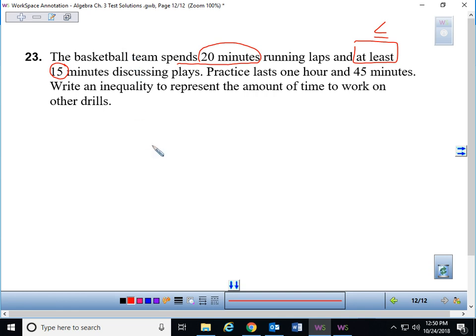And then it says, practice lasts 1 hour and 45 minutes. Okay, that's not too bad. Write an inequality to represent the amount of time to work on other drills. Okay, well other drills, I don't know what they are. So to represent something we don't know, we have to use a variable and you guys know I love x. So other drills represent x.